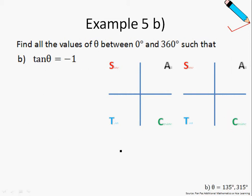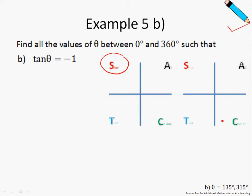Let's move on to example 5b. Similar question: find the values of θ between 0 and 360 degrees such that tangent θ is negative 1. Since the tangent of θ is a negative value, we have to be either in the sine quadrant or the cosine quadrant, because in those quadrants tangent θ gives us a negative value. If you have forgotten this, please watch the earlier videos in 11.2 where I explain the ASTC diagram.